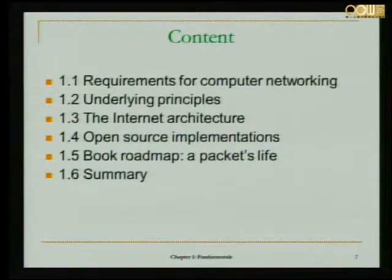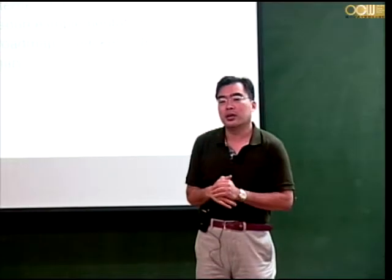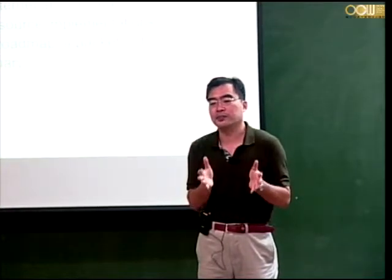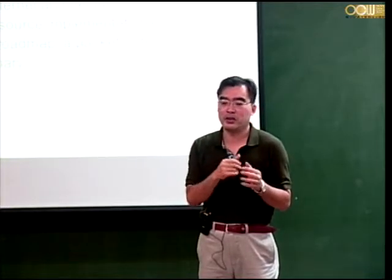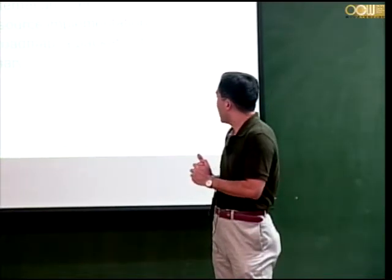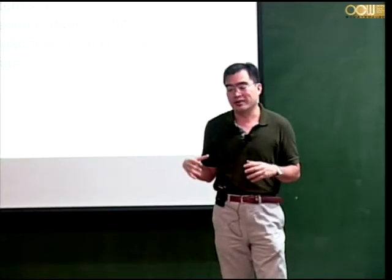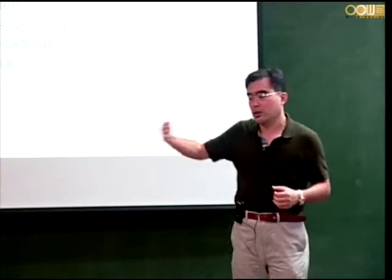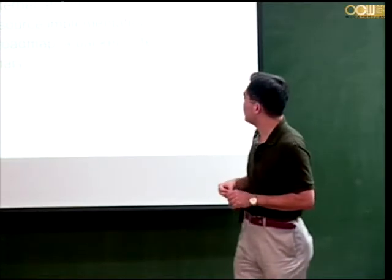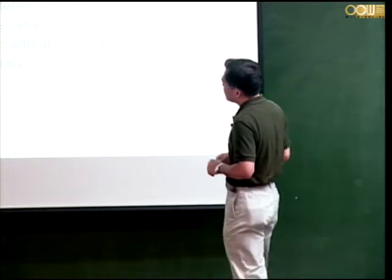We finish this chapter with a book roadmap, described in the fashion of a packet's life. We look at two particular systems: a router — how a packet might traverse within the router — and a server — how a packet might traverse within the server. There's also a sidebar covering the internet from source to destination across several routers. That's how a packet's life may look like in the internet. So that's the organization of the first chapter.